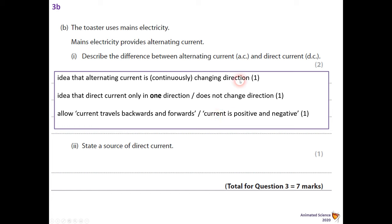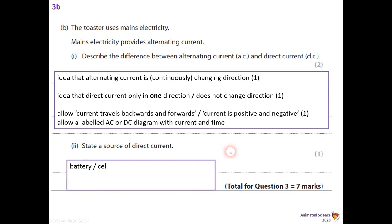State a source of direct current, DC current. Well, pretty straightforward, so we're looking for a battery or a cell, dynamo or suitably named cell, or you might have a solar panel or a solar power bank, something like that, something reasonable. So there's your question all done and dusted.